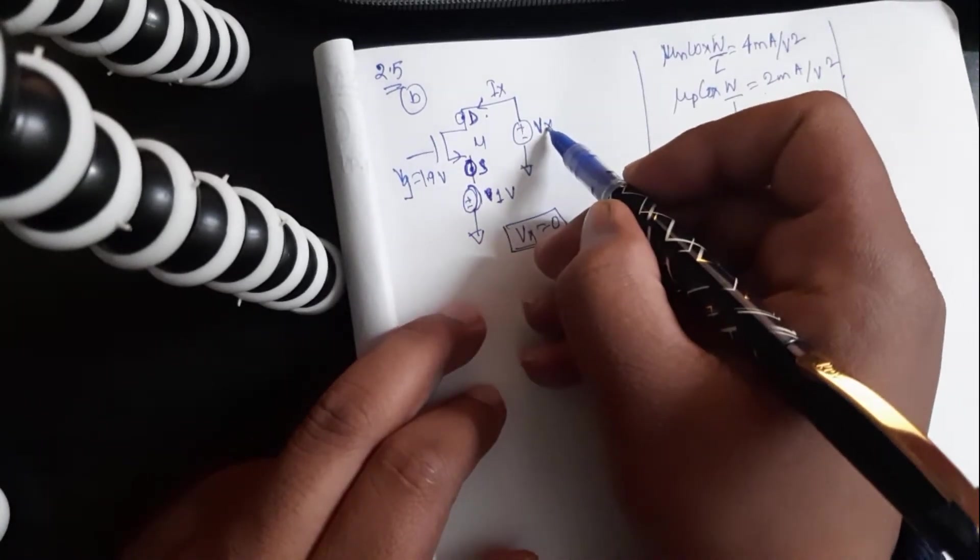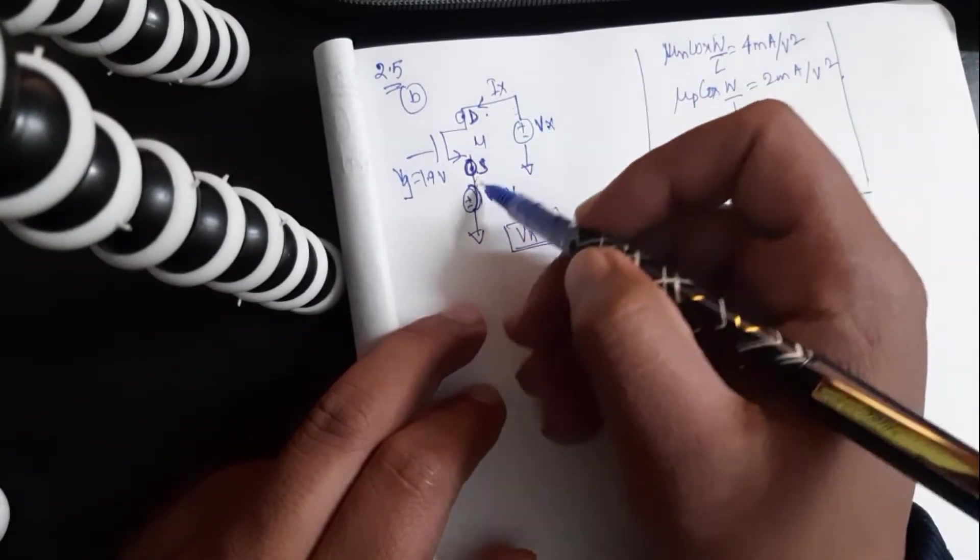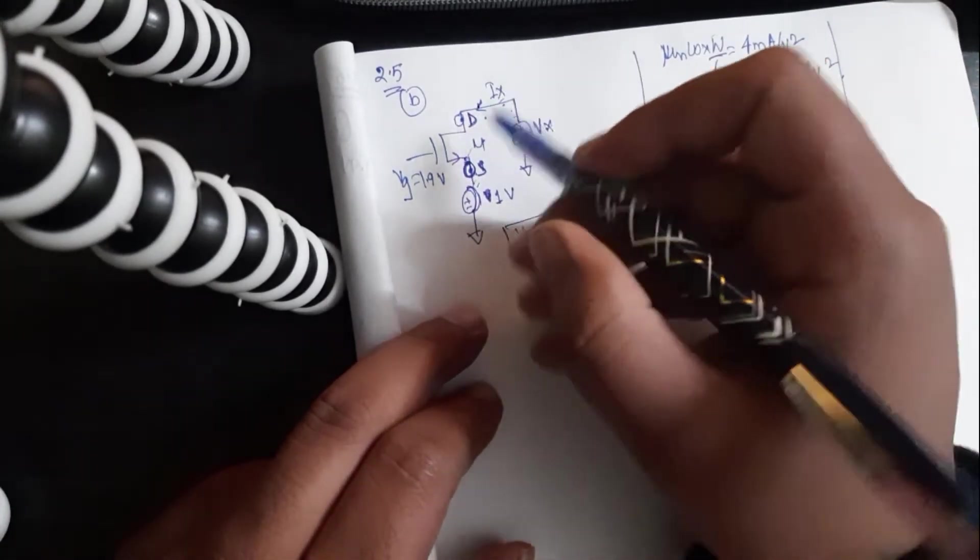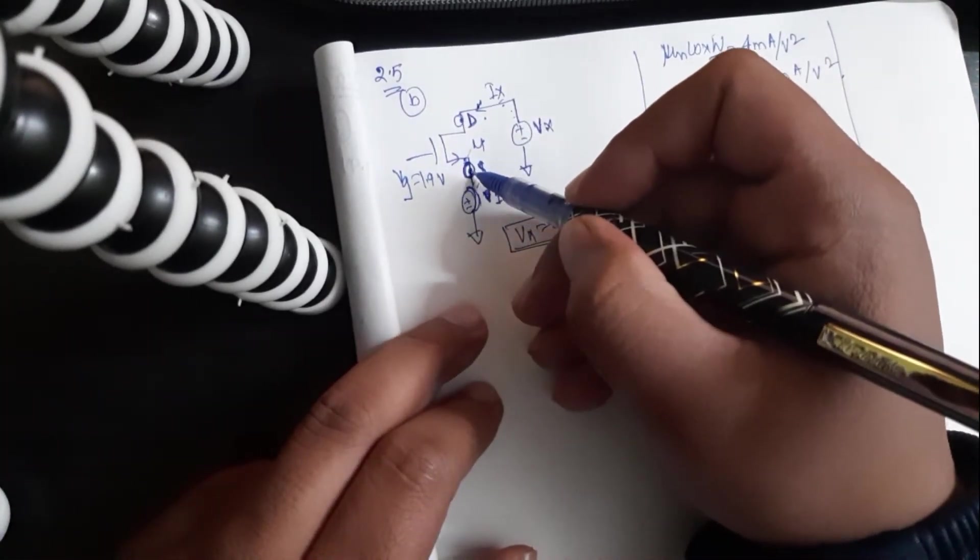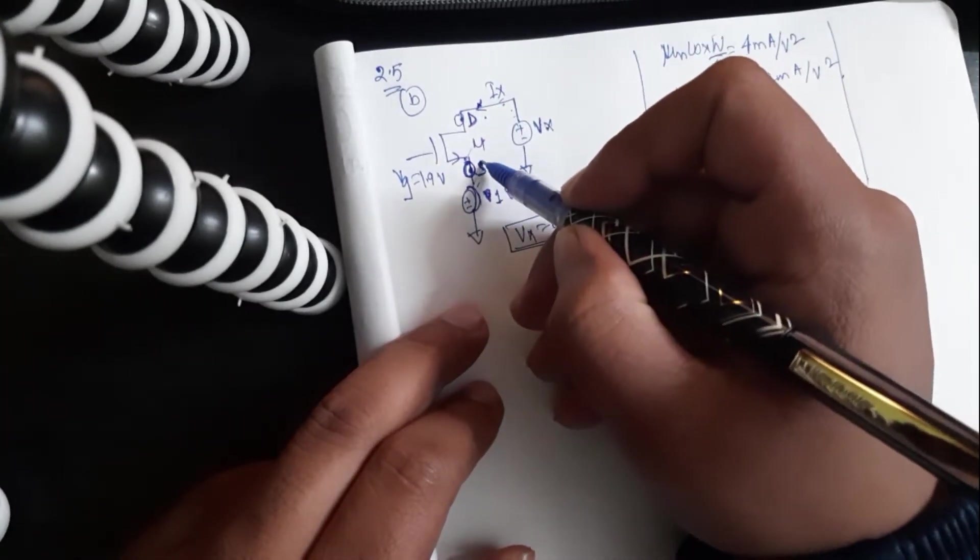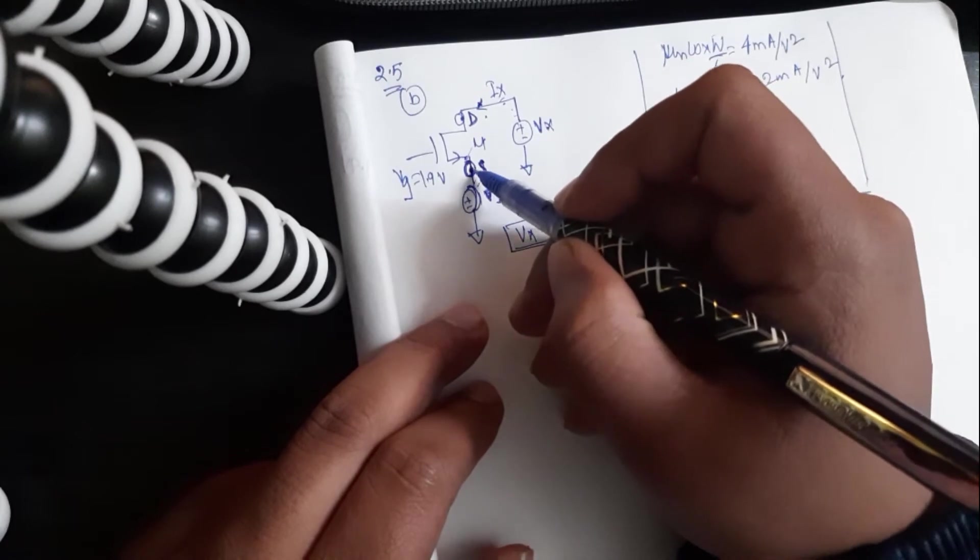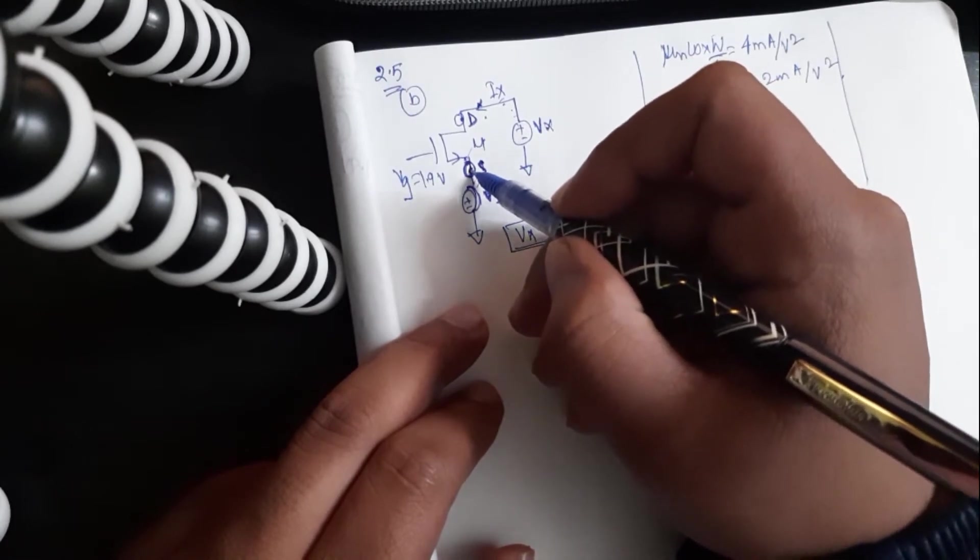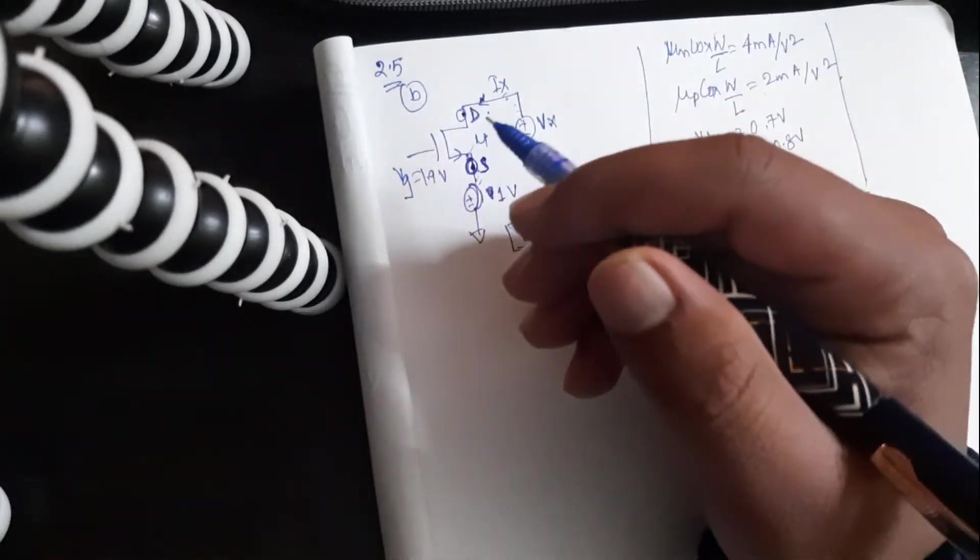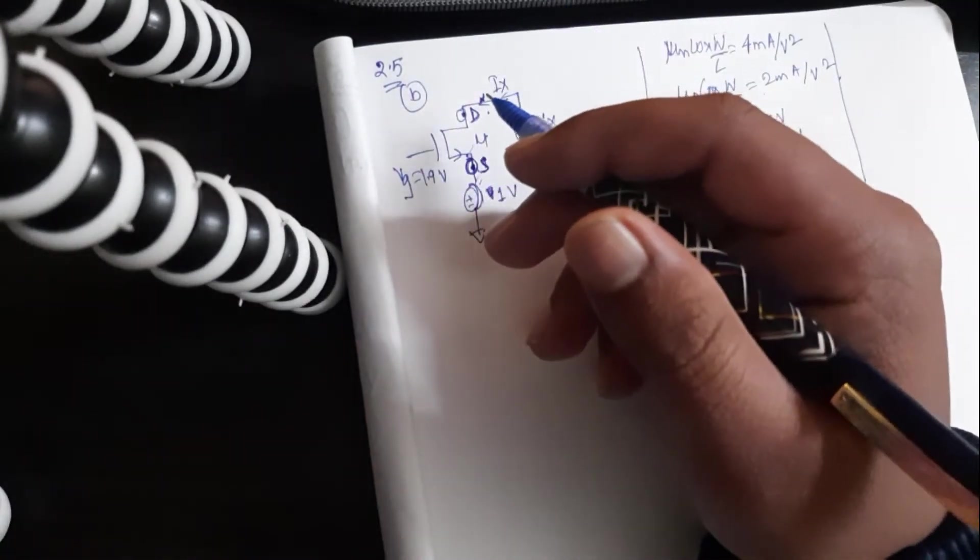When Vx is 0, the polarity of these two nodes is such that the current will flow from this node to this node. So in that case, this will not remain a source and this will not remain a drain. Basically, the roles of drain and source will change.